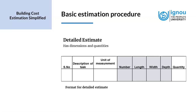In a detailed estimate, dimensions and quantities are recorded. We have a format with a column for serial number, then a column for description of task — whether it is excavation, brickwork, or whatever the task is. Then we have the unit of measurement, which is very integral — whether it is square meter, cubic meters, or whatever the unit is, we must mention it clearly in our estimate.